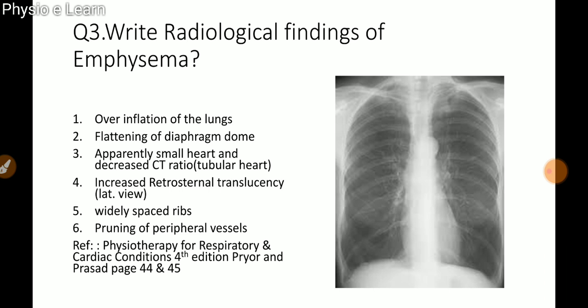Question three: radiological findings of emphysema. These include overinflation of the lungs, flattening of the diaphragm dome, apparently small heart and decreased cardiothoracic ratio or tubular heart, increased retrosternal translucency seen in the lateral view, widely spaced ribs, and pruning of the peripheral vessels. Writing all six findings will secure three marks in a short answer question.